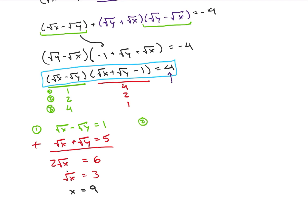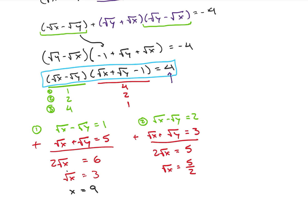Case 2: square root of x minus square root of y equals 2, and square root of x plus square root of y equals 3. Adding those gives 2 times square root of x equals 5, so square root of x equals 5 over 2. If I square both sides, I do not get an integer for x, so this case is not a solution.